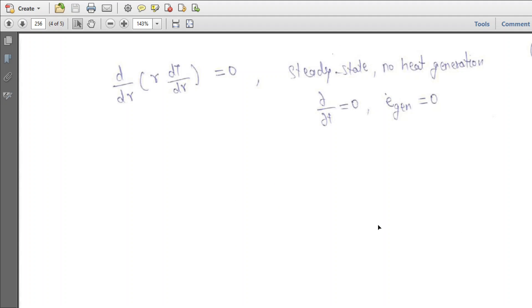For steady state with no heat generation, the governing equation is (d/dR)(R·dT/dR) equals zero. This needs two boundary conditions to solve it.